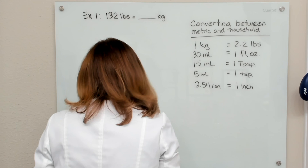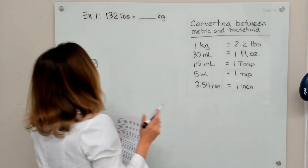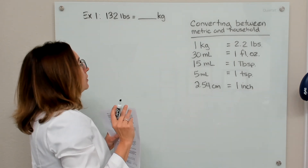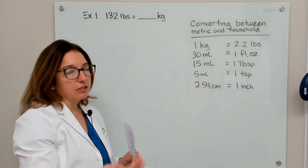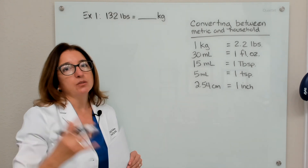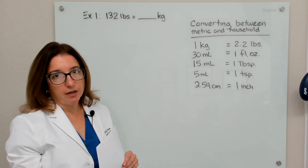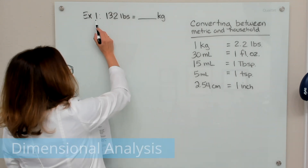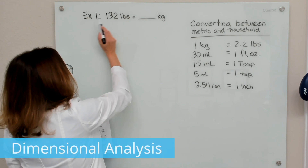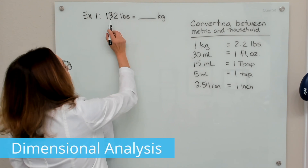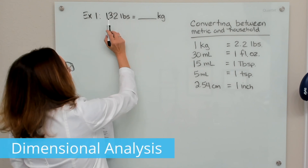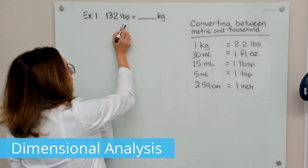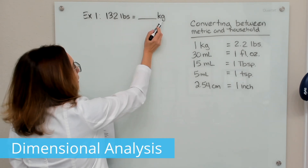We're going to work through four example problems, and I'm going to work through these problems using dimensional analysis as well as ratio and proportion. Our first example problem has us converting 132 pounds into kilograms.